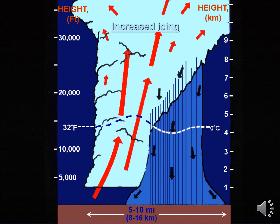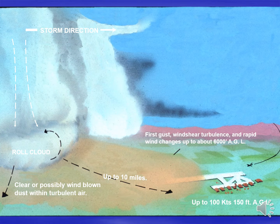The strong upward transport of supercooled droplets in a thunderstorm poses a significantly increased risk of icing. Note that the thunderstorm outflow, which is marked by a gust front — the lead edge of the strong winds emanating out of the thunderstorm — can extend several miles out from the parent thunderstorm. In this image, the gust front is extending 10 miles out from the parent thunderstorm.